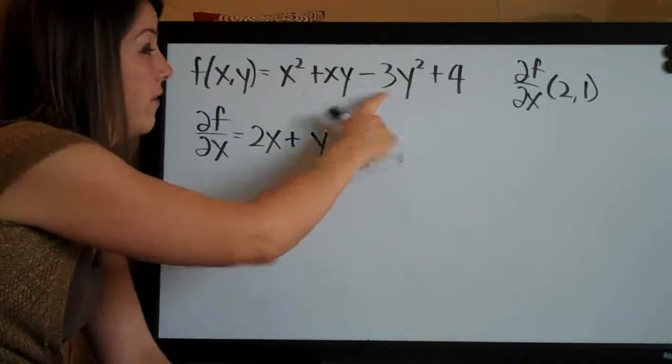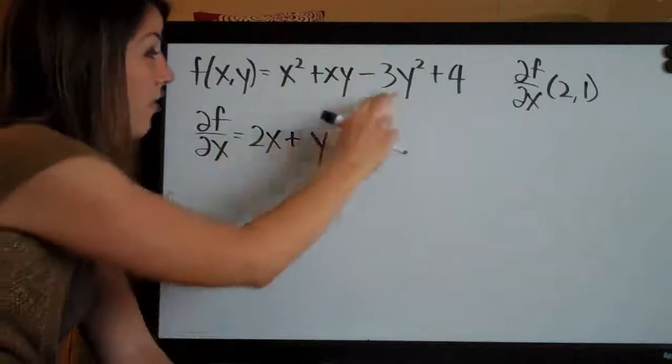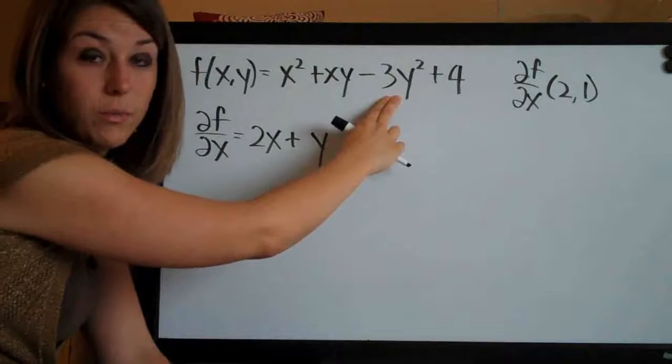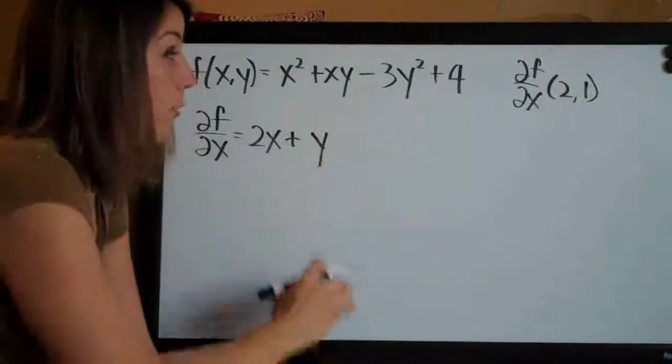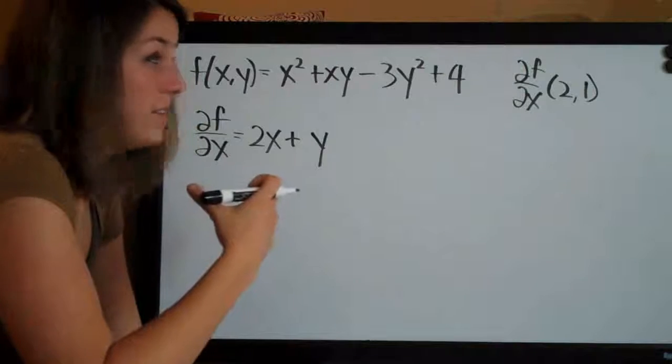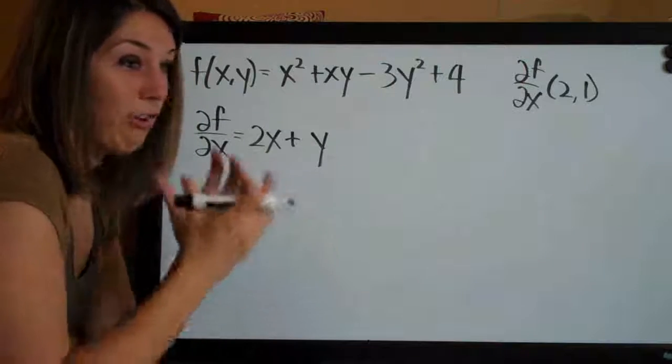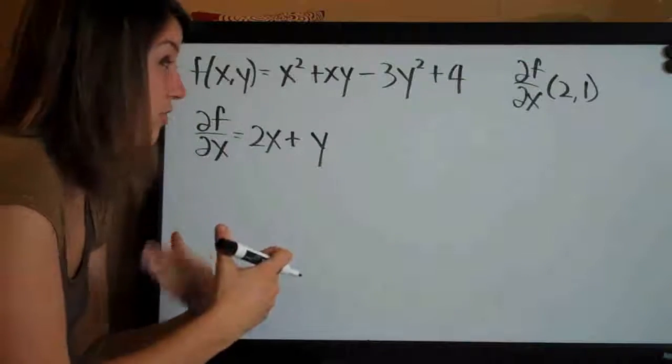Basically the rule here is if we're taking the derivative with respect to x and there are no x's involved in the term that we're dealing with, it's 0 because every other variable is a constant. You're going to end up multiplying everything out. It's going to end up being a constant and it'll just disappear.